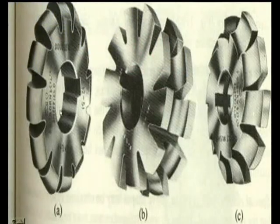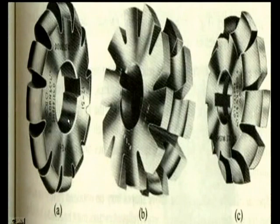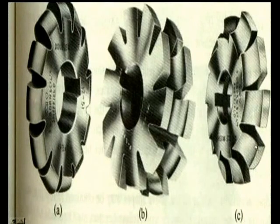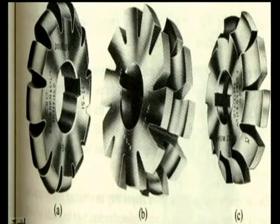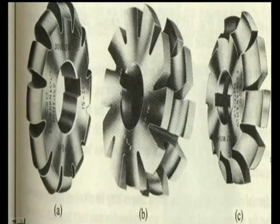The second form is form relieved cutters. Form relieved means the required form is to be obtained on the work surface. Sometimes we require a concave surface, a convex surface, or a curved surface. This is a form cutter which is a convex type leaving concavity on the work surface. A concave type of cutter leaves the convexity on the surface. These are specified by the diameter of the concavity or convexity and the line radius.